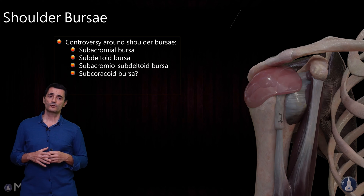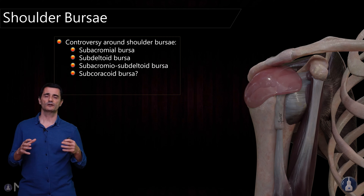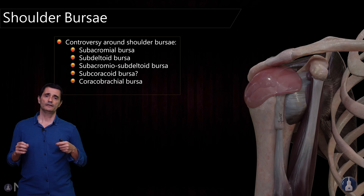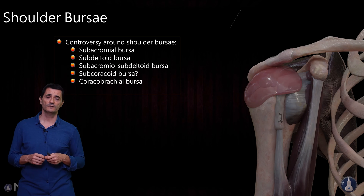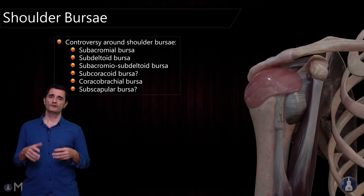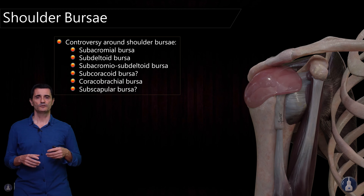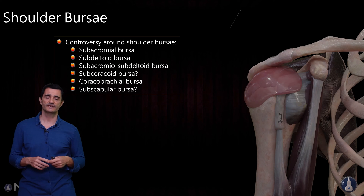The subacromial bursa — it's not certain that it is a real bursa at the subacromial space, but usually people think about this bursa. The subdeltoid bursa is a very clear one. And finally, the subscapular bursa, again with controversy, because some say that this is an anterior recess of the glenohumeral joint.